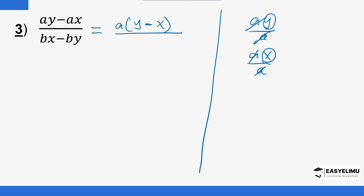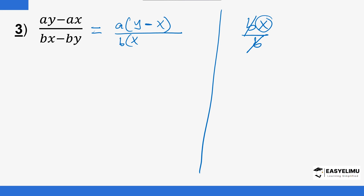This is divided by the denominator, which again has a common factor of b. B·x divided by b is x, and b·y divided by b is y, giving the bracket (x − y) in the denominator. Now if you look at these two brackets — (y − x) in the numerator and (x − y) in the denominator — they are not really the same, so we cannot simply cancel them.